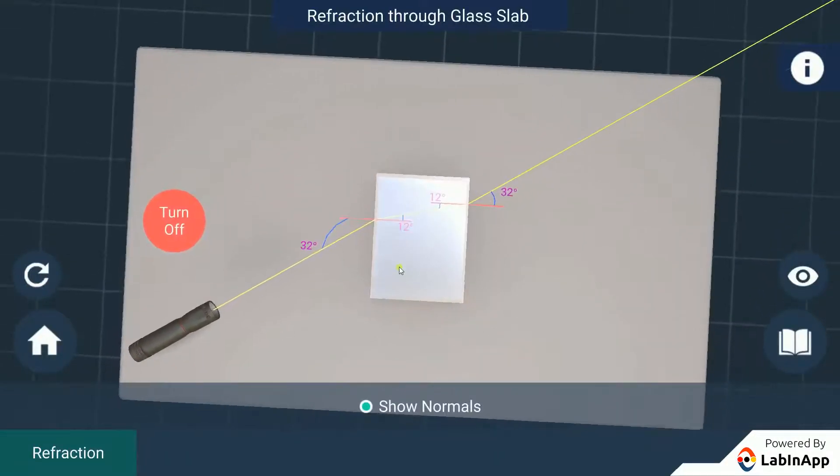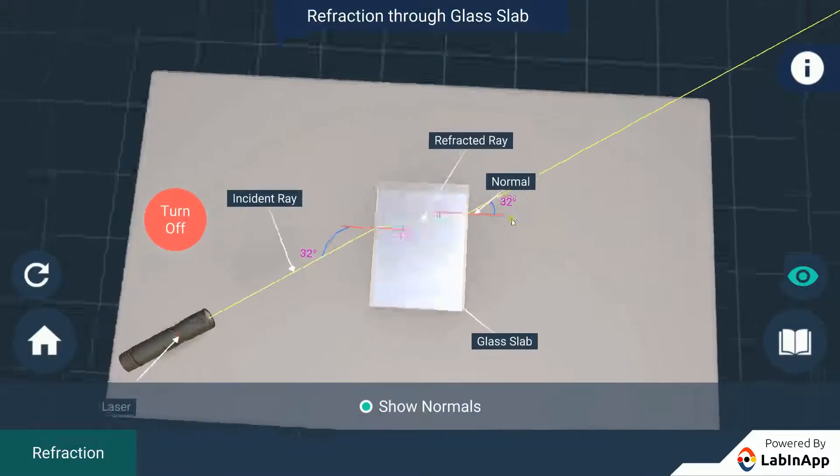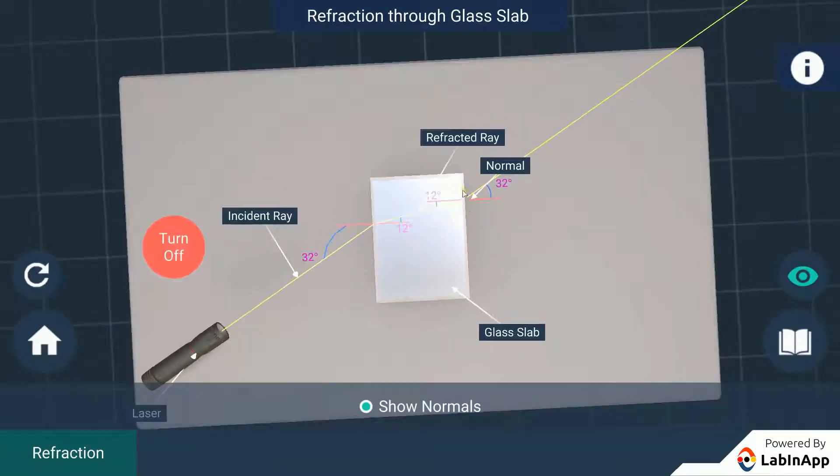Initially, the ray hits on the glass surface from air to glass medium. Here, the incident ray refracts inside the glass slab towards the normal. Travelling further, the ray hits the other side of the glass slab and passes through the glass medium to air, and the emergent ray deviates away from the normal.